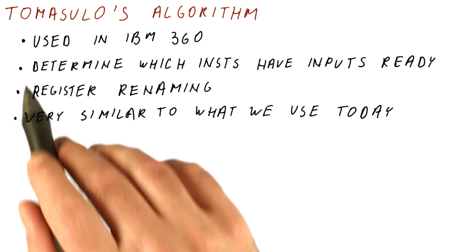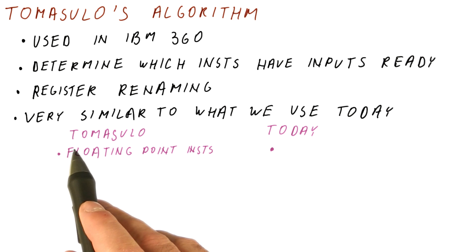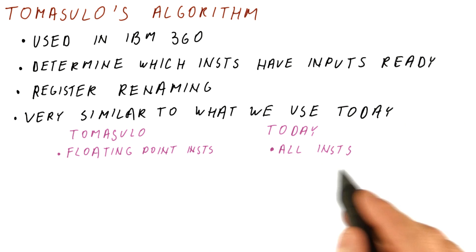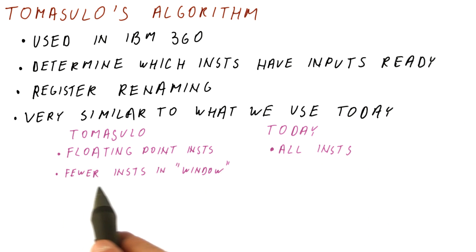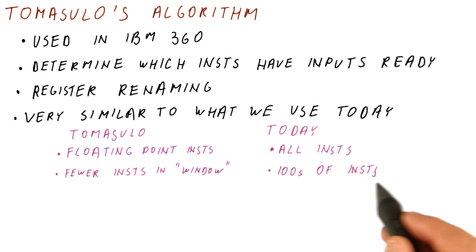The differences between Tomasulo's algorithm and what is used today are the following. In the olden days when Tomasulo's algorithm was implemented, they did that only for floating-point instructions, while today we do it for all instructions. Also, they had relatively few instructions in the window they were looking at, meaning they looked over some small number of instructions into the future instructions that need to be executed, while today we look at hundreds of instructions past the one we are still executing.